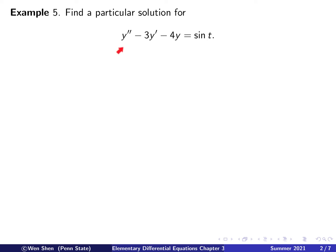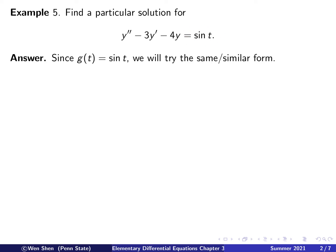The example is y double prime minus 3y prime minus 4y equals sine t, so the right-hand side is a sine function. We will focus on finding the form of the particular solution. We see that the function g is a sine function, so based on our experience we will try to find a particular solution with the same or similar form.